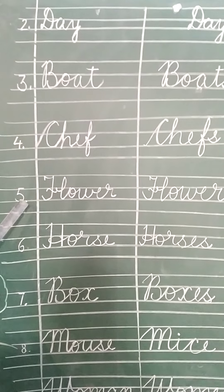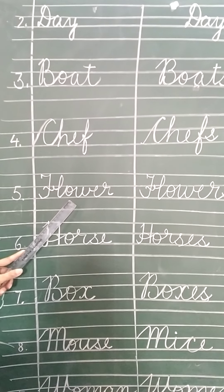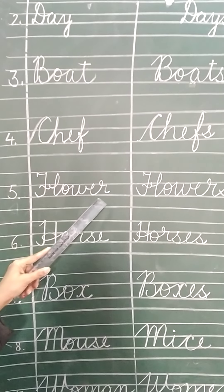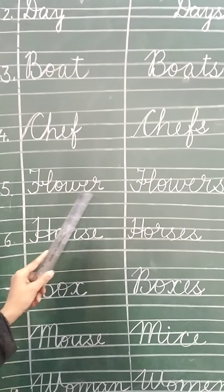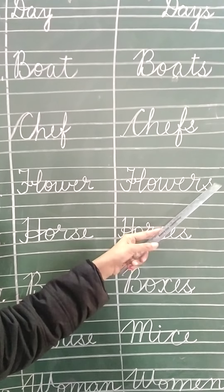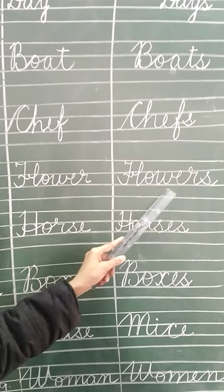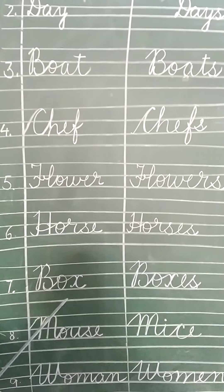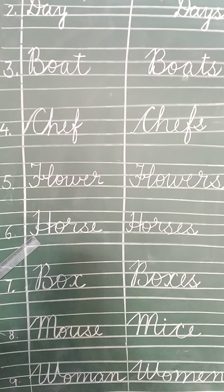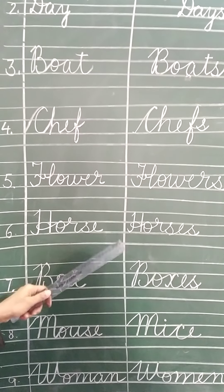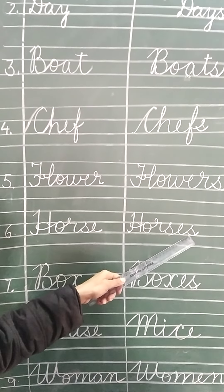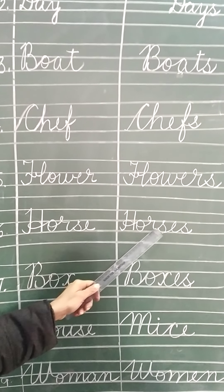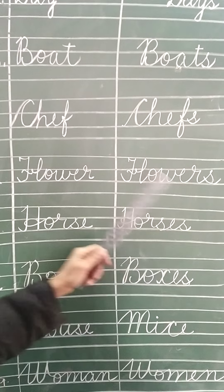Number five is flower — F, L, O, W, E, R. If we add S it becomes plural: flowers — more than one flower. Number six is horse — H, O, R, S, E. Again we add only S and it becomes plural: horses.